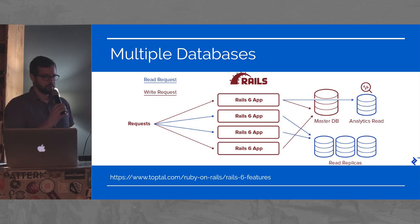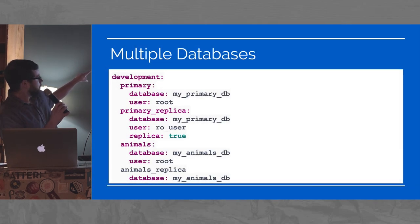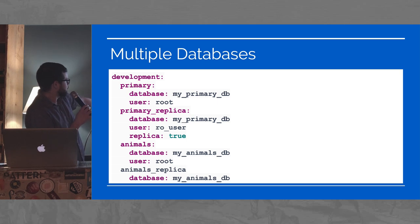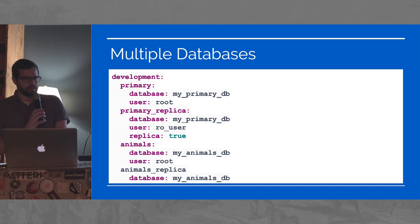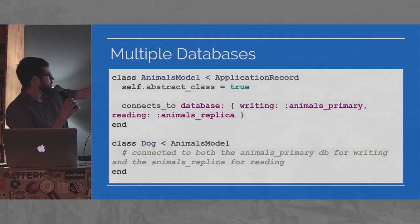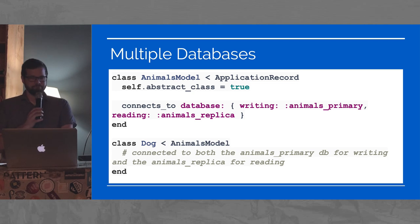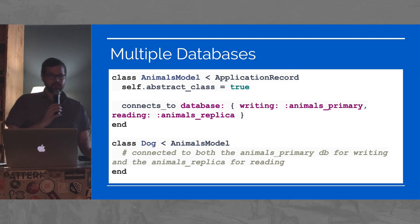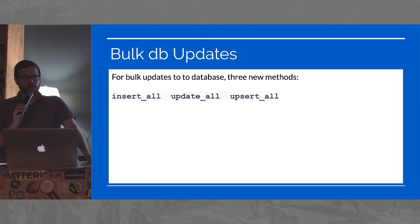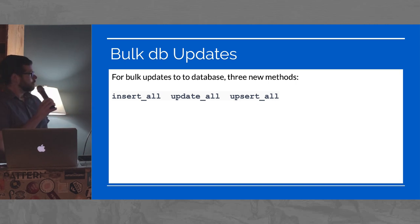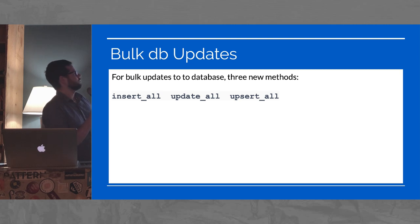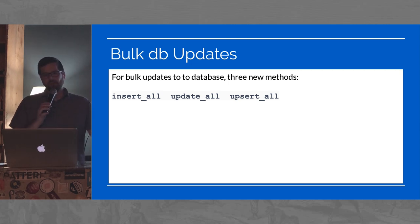This is how you do it — you can have a primary and then animals and animals replica in their example. You connect to a database and tell it whether you're writing or reading, and to which one — this is by model. Next is bulk database updates. Previously you either had to write SQL by hand or do it in a big loop. These do a single SQL query for insert, update, or upsert a whole bunch of stuff — you give it an array, it does one big SQL query.